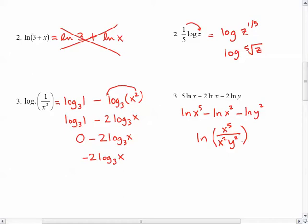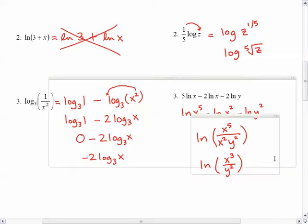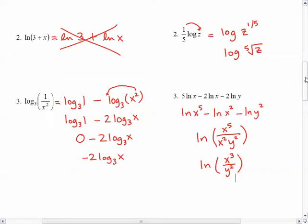I could certainly cross-cancel some of the x's and end up with something that looks like that. So those are a little bit more simple examples. Let's take a look at some harder ones on the back.